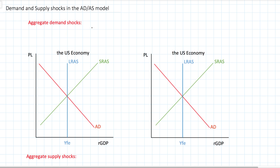In our last video we talked about the states of short-run equilibrium that a country's economy could experience. We showed in AD-AS graphs what positive output gaps and what negative output gaps look like. In this video we're going to step back and talk about the factors that could cause positive and negative output gaps, using shocks to aggregate demand and aggregate supply, and show how a country's economy will adjust in the short-run to a new equilibrium following a shock to either AD or AS.